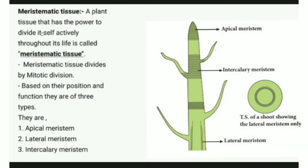A plant tissue that has the power to divide itself actively throughout its life cycle is called meristematic tissue. It divides actively throughout its life with mitotic division — the division of plant body cells — as opposed to meiosis, which is the division of egg cells and sperm cells.